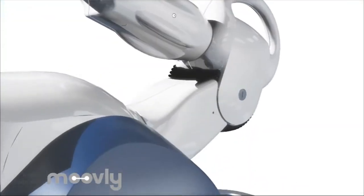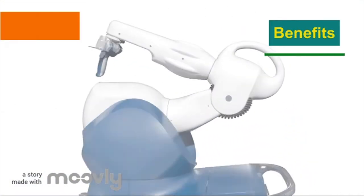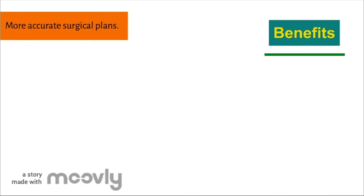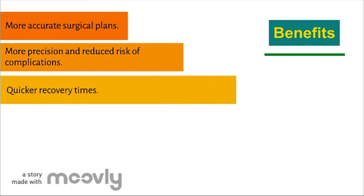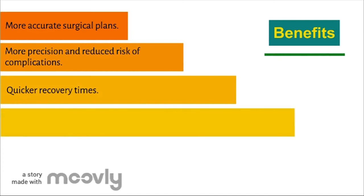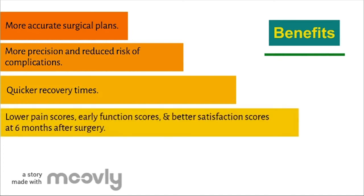Like every technology, Mako has both benefits and drawbacks. Firstly, this procedure enables surgeons to execute their surgical plans more accurately, because the patient's personalized surgical plan is based on their anatomy. Another benefit is that the Mako arthroplasty procedure is precise and thus reduces the risk of complications, as the robot helps the surgeon locate cuts in predefined areas and avoid moving out of those boundaries. Additionally, the Mako procedure leads to less pain and has a quicker recovery time than traditional joint replacement. Patients reported lower pain scores, early function scores, and better satisfaction scores six months after surgery than those who received a conventional joint replacement.